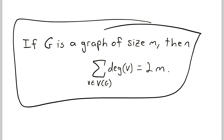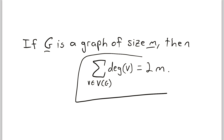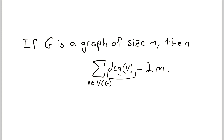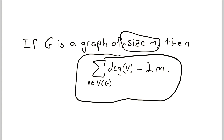And here it is — this is the first theorem of graph theory. It says that if G is a graph of size m (remember that the size of a graph is just the number of edges it has), then the sum of the degrees of all of its vertices is equal to 2m, so that's 2 times the number of edges in the graph. Remember that the degree of a vertex v is the number of edges incident to v, or equivalently, the number of vertices that v is adjacent to. The summation is taken over all vertices in the vertex set of G.